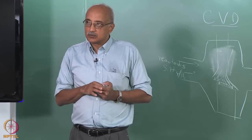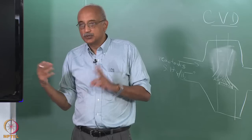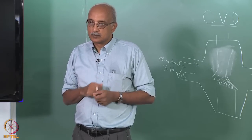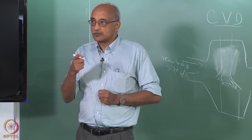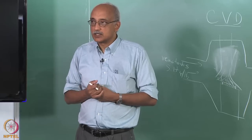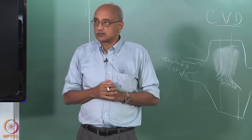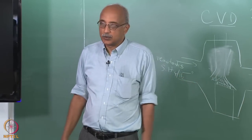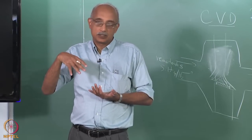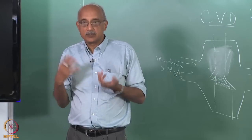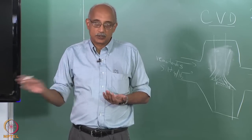Whereas if you are trying to make a very thin and uniform CVD film, you prefer to use the parallel flow configuration. So vertical stagnation flow is for thick films; parallel flow is for thin, uniform CVD films.